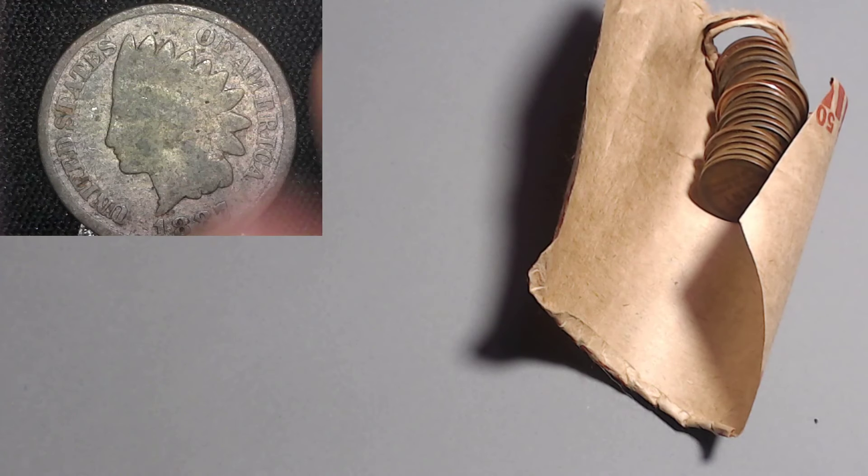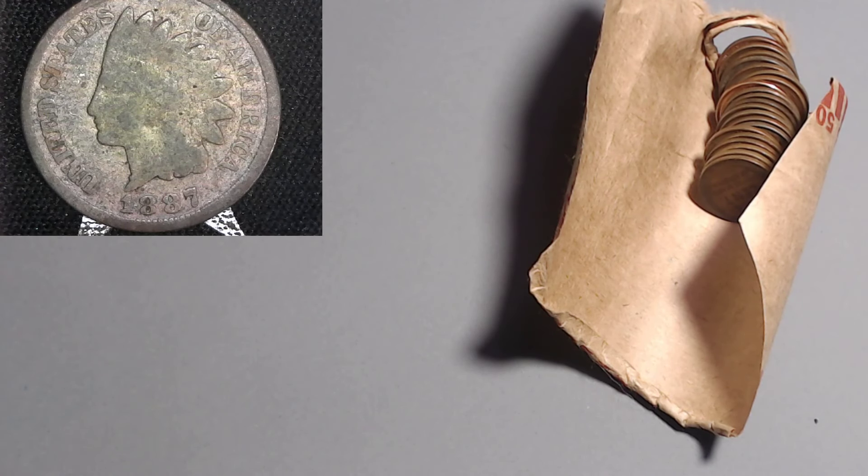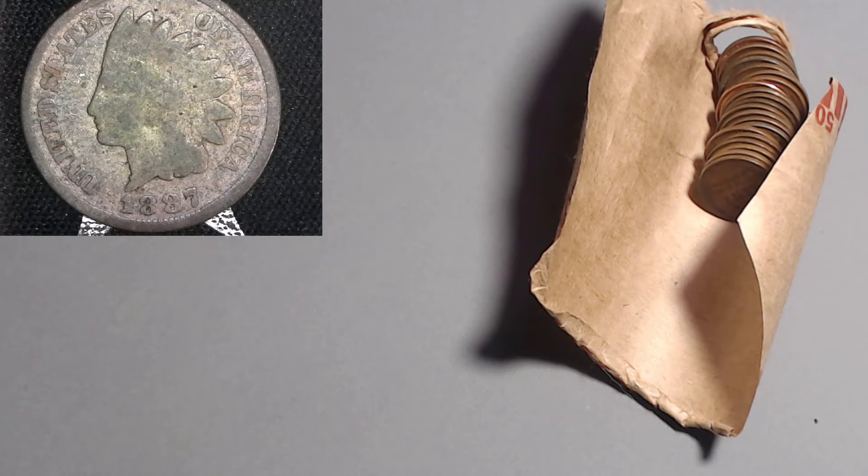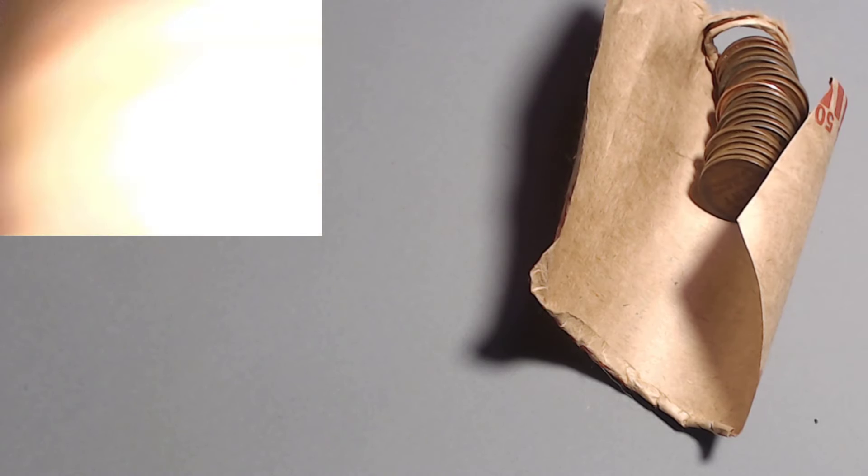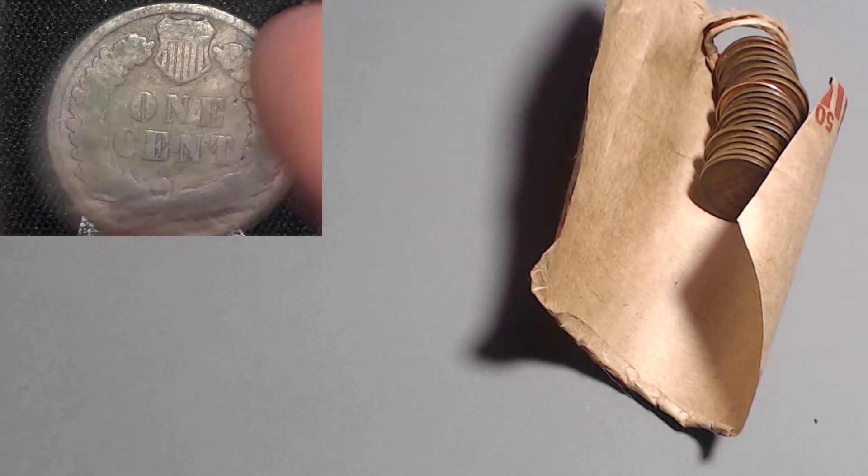There it is guys. There she is. The 1887 Indian head penny. 1887, 45 million. Not the lowest mintage for the Indian heads. But she's plenty old. She's showing it though. She's got some wear. Got some crust. It's always nice to find an Indian head though.